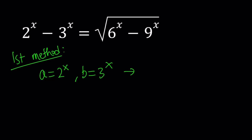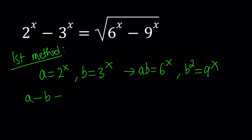This has some consequences: if I multiply a and b together, I get 6 to the power x. And if I square b, I get 9 to the power x. The reason I chose those is because we have them in our expression. So from here, we get the following equation: a minus b equals the square root of ab minus b squared.